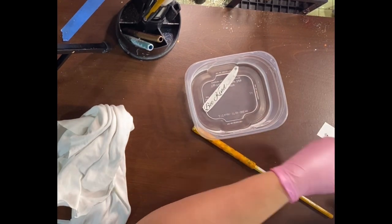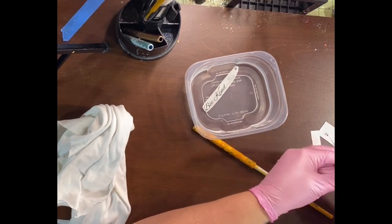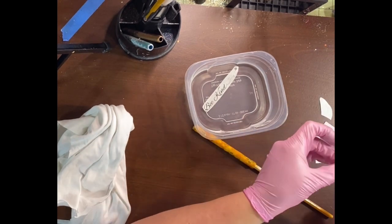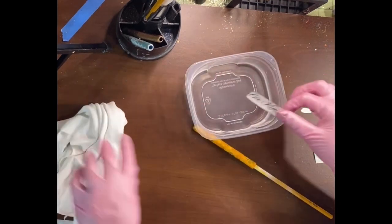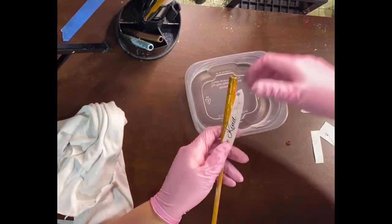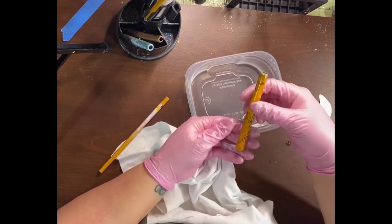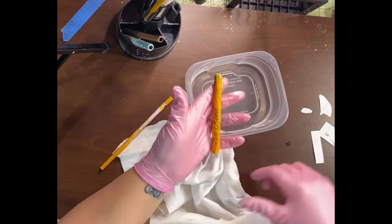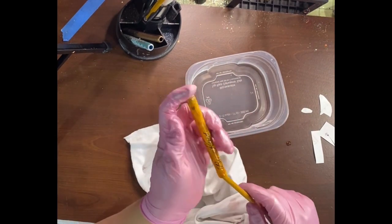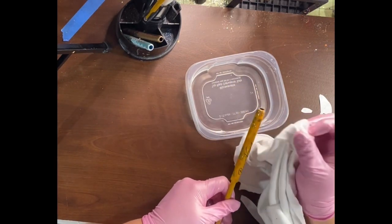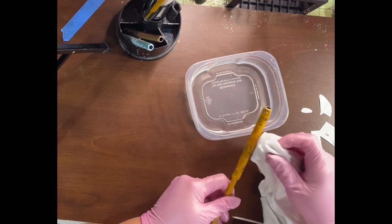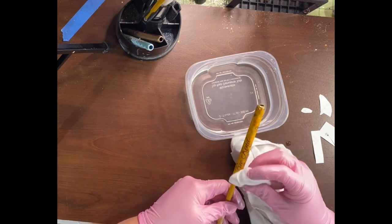Cut your water slides out close as you possibly can to the image. Once it releases from the back, it is good to get put onto your pen. Once it is on your pen, you're then going to want to use your finger or a rag and kind of get out any water that could be trapped underneath the water slide.